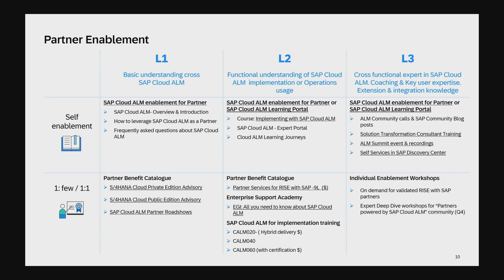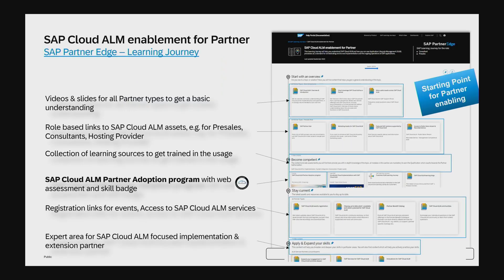For L3, one or two people per partner should be deeper experts — someone who can coach others, collaborate with us on deep-dive questions. We recommend having at least one or two people, depending on company size, who know Cloud ALM deeply. We have regular community councils for engagement. The typical starting point I recommend when a partner first asks how to learn Cloud ALM is our partner-specific learning journey.